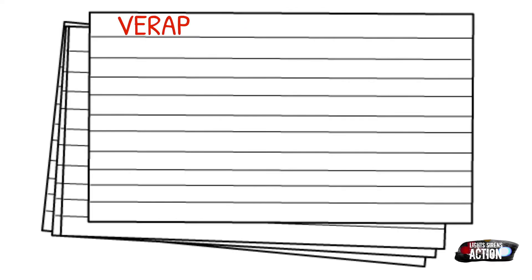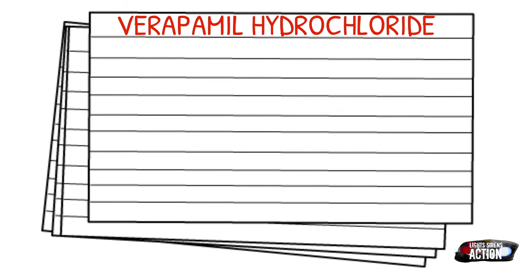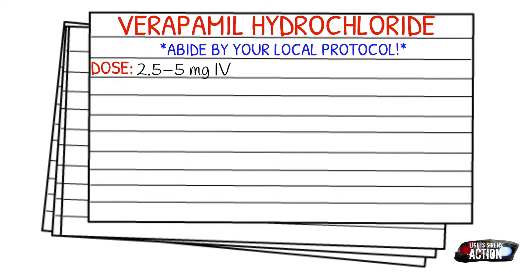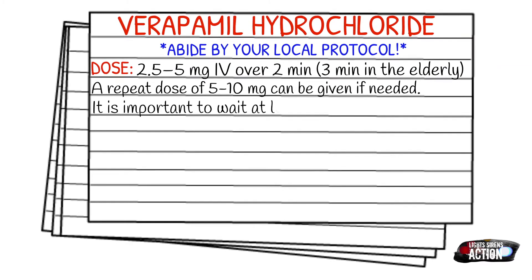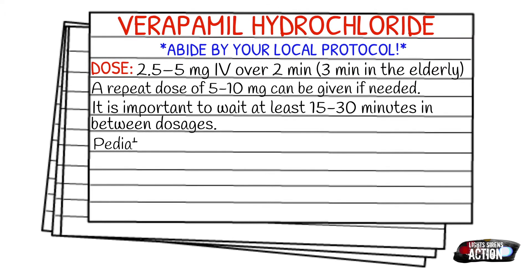As always, before we get into dosages, please abide by your local protocol and stay within your scope of practice. Your adult dose is going to be 2.5 to 5 mg IV over 2 minutes — over 3 minutes in the elderly. A repeat dose of 5 to 10 mg can be given if needed. It's important to wait at least 15 to 30 minutes between each dosage. Your pediatric dose is going to be 0.01 to 0.02 mg per kg IV or IO over 2 minutes.